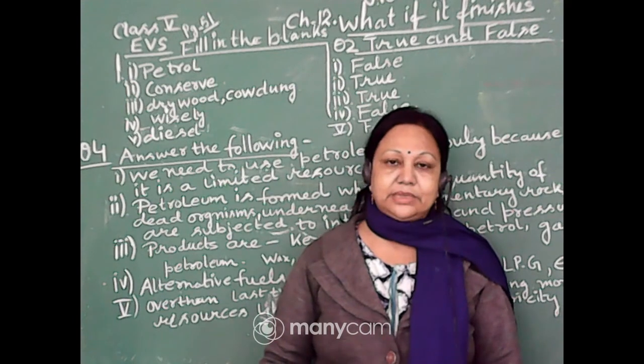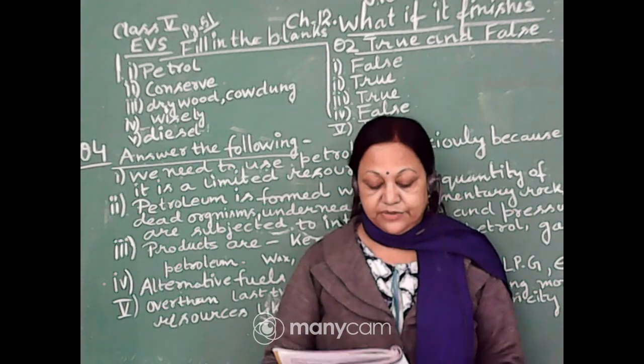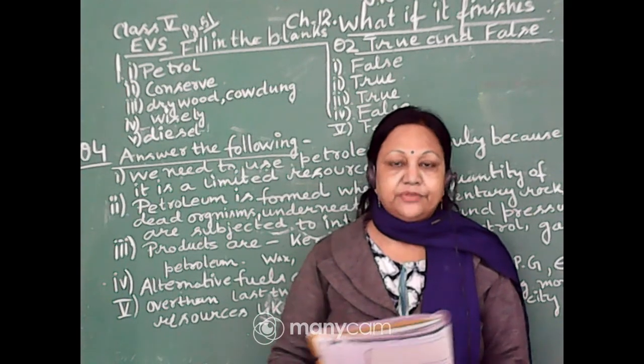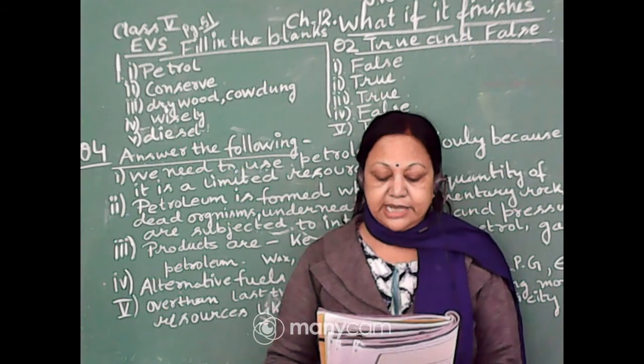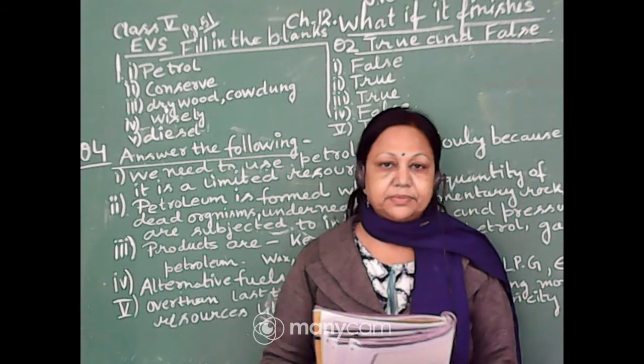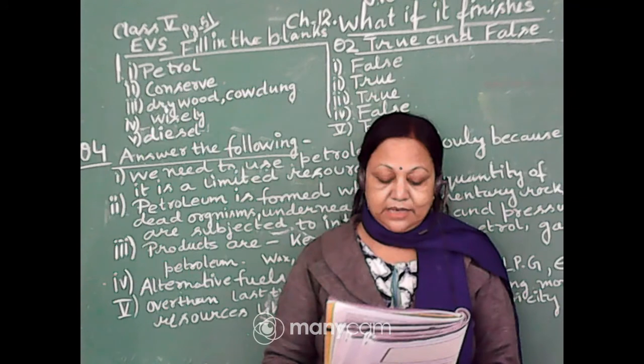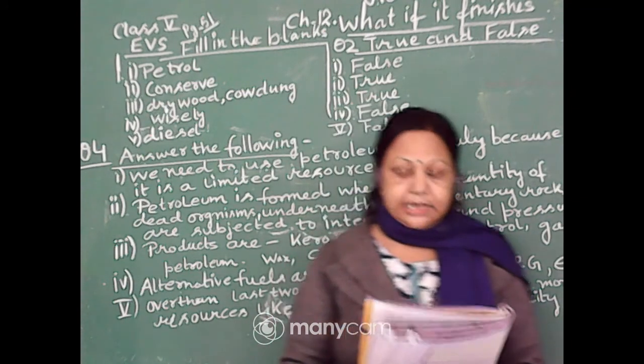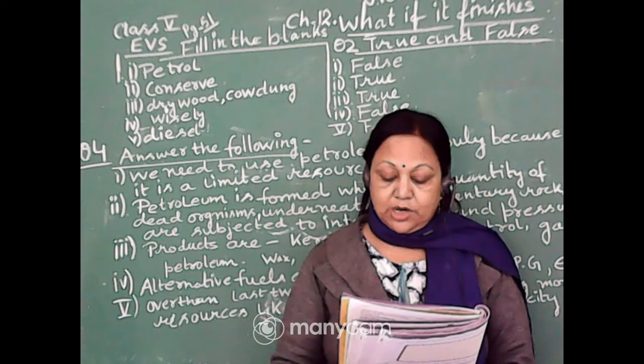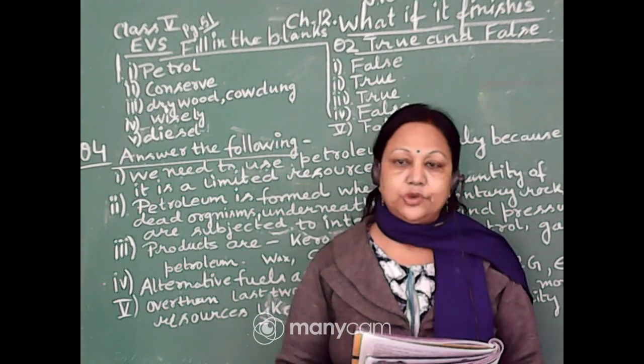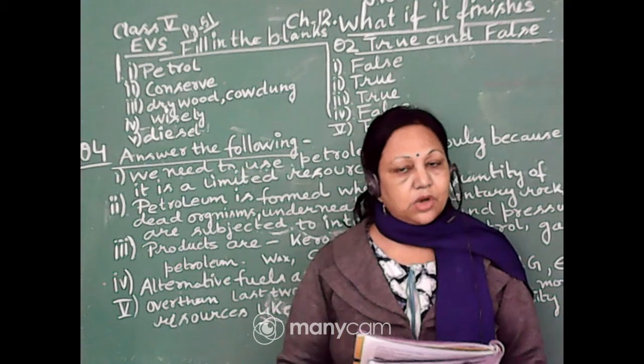Now, the question answers of the activity book we will complete. First, fill in the blanks with the correct word. First one is, dash takes lack of years to be formed. It is petrol. Second, we have limited resources, so petrol should be dash for our future. It should be conserved.